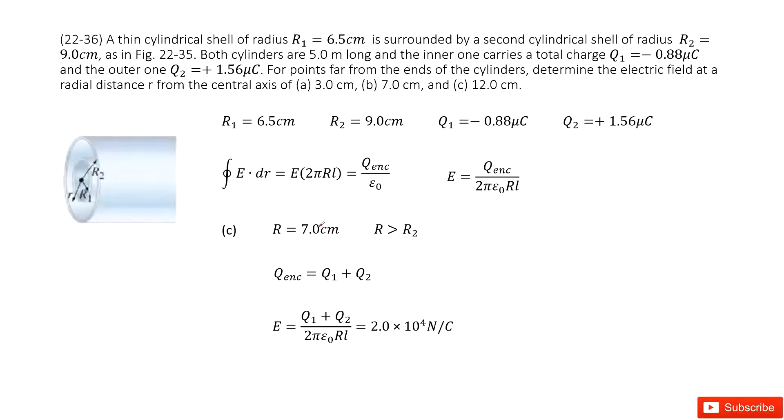The next one we can look at is the location at 12 centimeters. This r is larger than R2. So we can draw a Gaussian surface. And for this Gaussian surface, still we look at the enclosed charge. You can see this is Q1. This is Q2. So enclosed charge is Q1 + Q2. We replace the enclosed charge as Q1 + Q2. Then input all the known quantities. Get the answer.